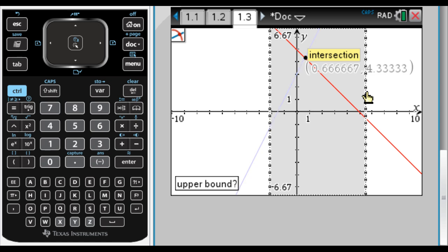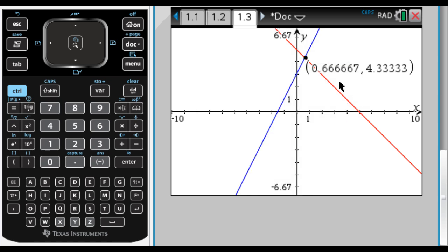I'm going to click again. And there's the intersection point. So 0.6 repeating and 4.3 repeating. It's a little inconvenient because those are decimals, but it's not bad. If we were allowed decimal answers, that would be the answer.